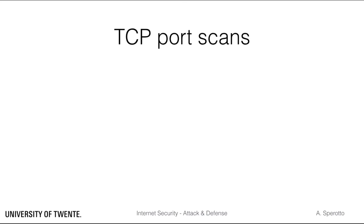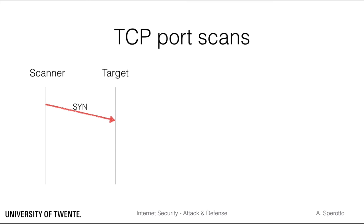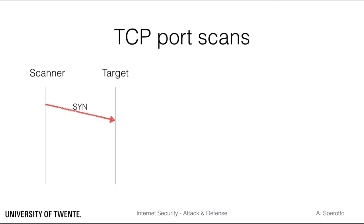The simplest way of scanning a host using TCP is to rely on the operating system network functions — that is, use the regular implementation of TCP. A scanner can, for example, use a regular TCP handshake to check if a port is open. It will send a SYN packet, receive a SYN-ACK answer if the port is open, and then complete the handshake with an ACK. Alternatively, the scanner will receive a RESET packet if the port is closed. So far, this is the regular TCP behavior.